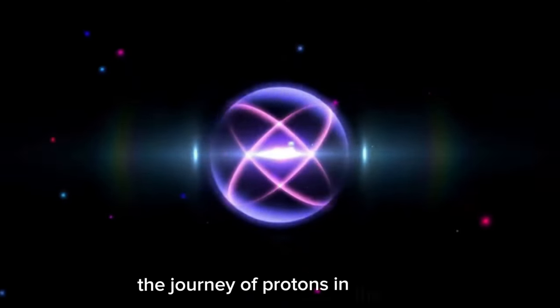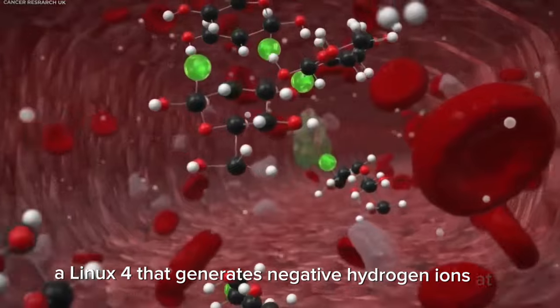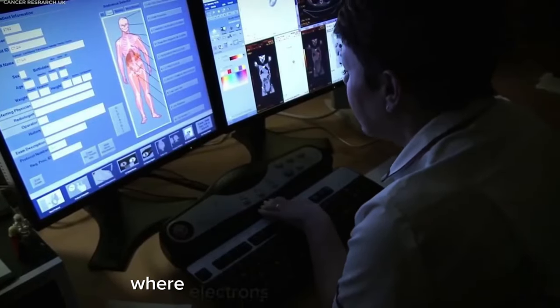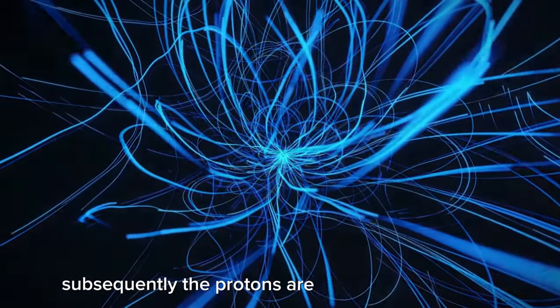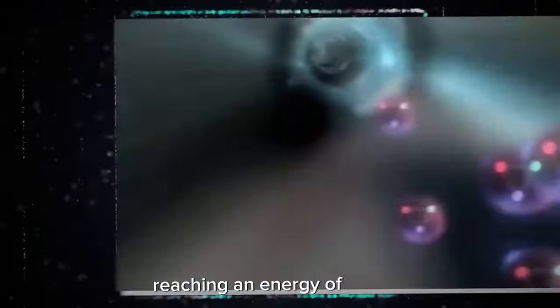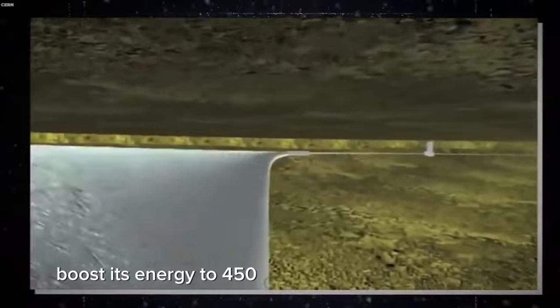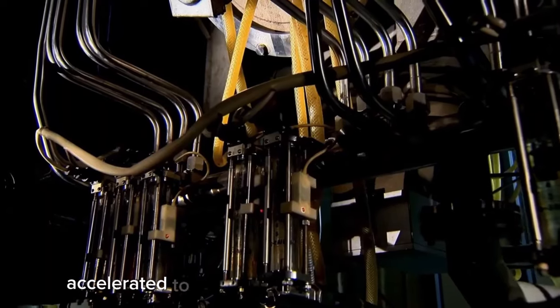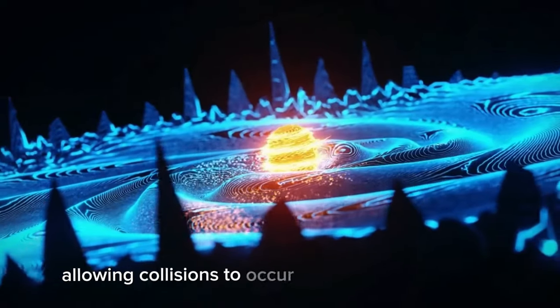The journey of protons in the LHC begins in a linear particle accelerator, a LINAC4, that generates negative hydrogen ions at 160 MeV, mega electron volts. These ions then move through the proton synchrotron booster, where electrons are stripped away, leaving only the nucleus with a single proton. Subsequently, the protons are accelerated to 2 GeV, giga electron volts, and enter the proton synchrotron, reaching an energy of 26 GeV. Finally, the super proton synchrotron boosts its energy to 450 GeV before its injection into the main ring. In this ring, protons are accumulated, accelerated to their peak energy over 20 minutes, and circulated for 5 to 24 hours, allowing collisions to occur at the four intersection points.